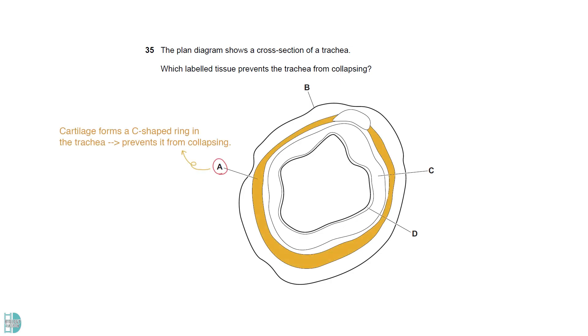Cartilage in the trachea prevents it from collapsing. It forms a C-shaped ring, which is shown in A. B points to the outermost line. It does not label any layer. C is the submucosa layer. It is composed of loose connective tissue and contains important structures such as blood vessels, nerves, and mucus glands.